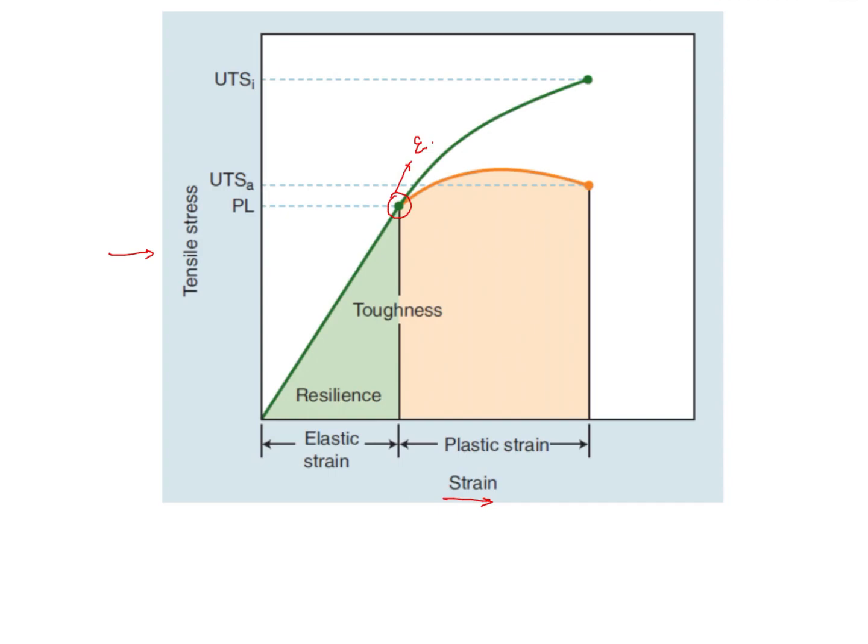Now if you see the area under the stress strain graph, you will see words like resilience and toughness. So it means that greater the modulus of elasticity, the better that material can withstand forces. That means it will not distort very easily.